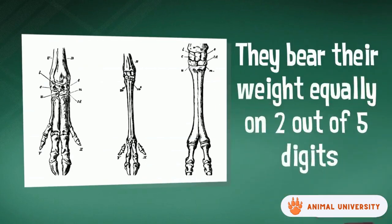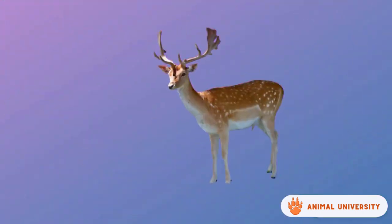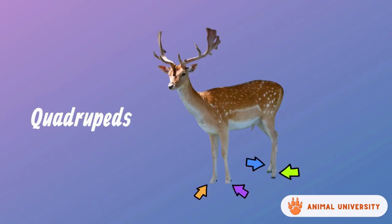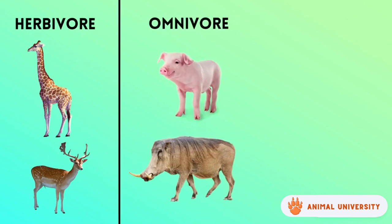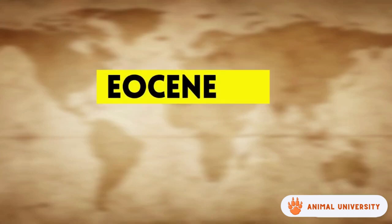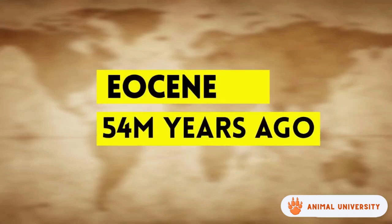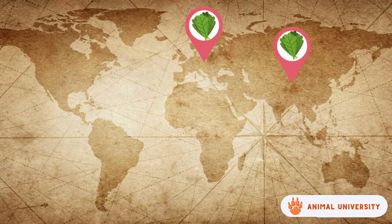Pecora includes giraffes, pronghorns, deer, cattle, goats, antelopes, etc. They bear their weight equally on two out of five digits. The remaining digits are useless. They are also quadrupeds, meaning that they walk on four limbs. Majority of this order are herbivores, but pigs are generally omnivores while cetaceans are usually carnivores.